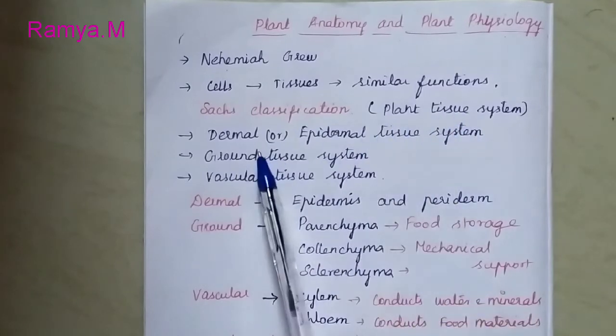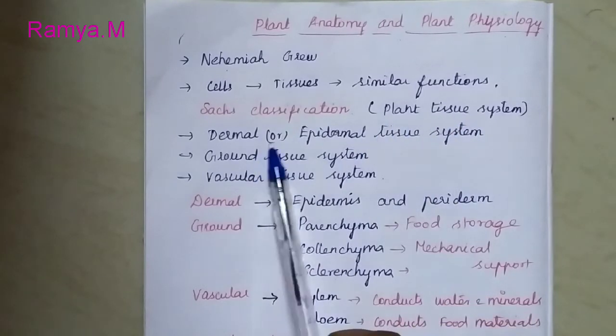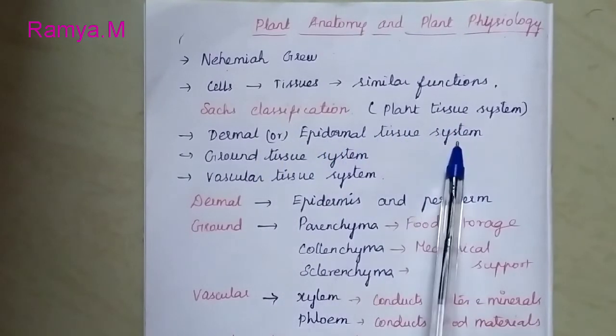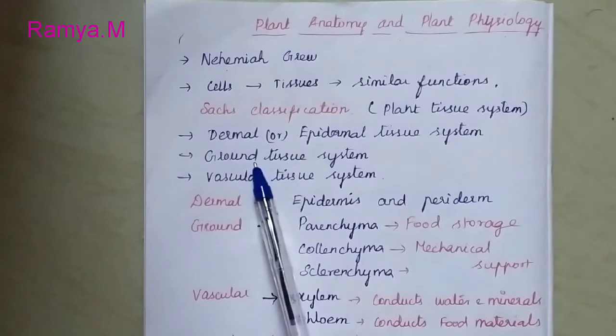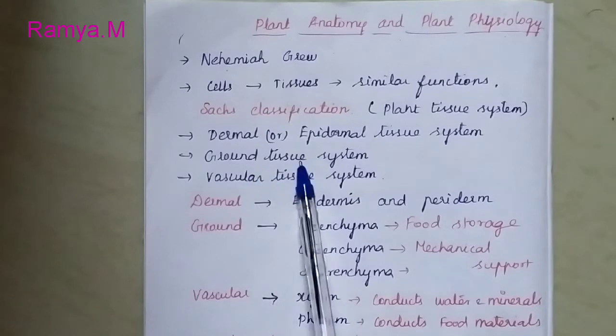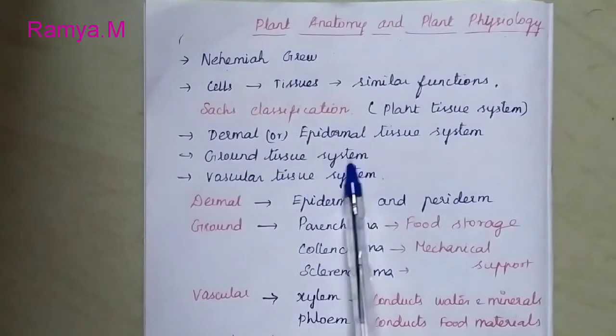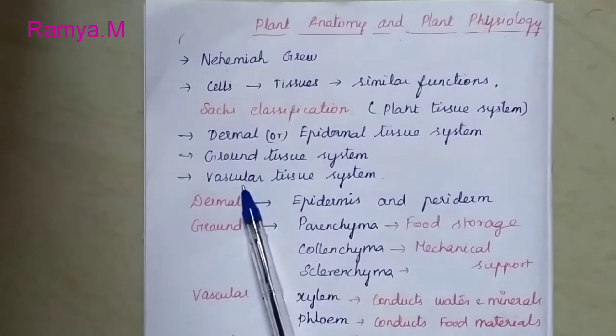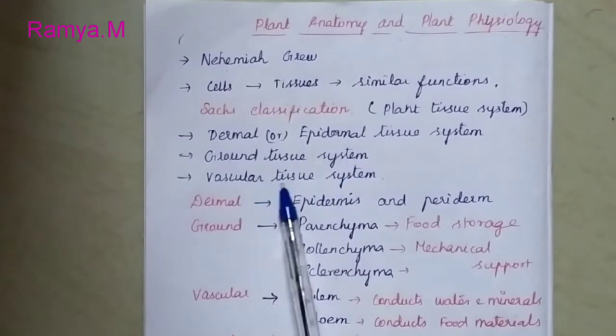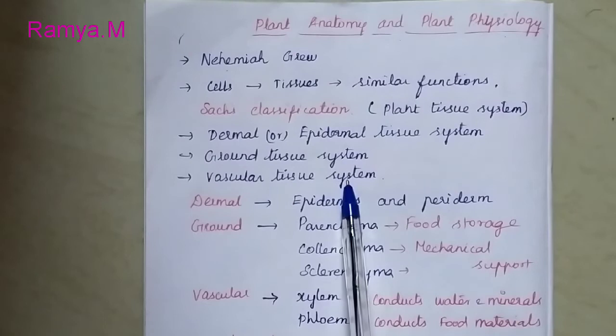One is the dermal or epidermal tissue system. The second one is the ground tissue system, and the third one is the vascular tissue system.